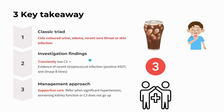The second key takeaway is the investigation findings. We need to have transiently low C3 — C3 is the complement level. I need to emphasize 'transiently'; it won't decrease for a very long time. Secondly, we need to have evidence of recent streptococcal infection, such as positive ASOT or anti-DNase B titers. The third key takeaway is management: supportive care is needed in most cases. Refer when there is significant hypertension, worsening kidney function, or if C3 does not go up.